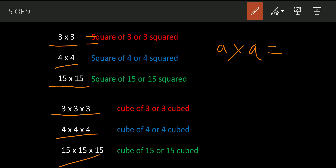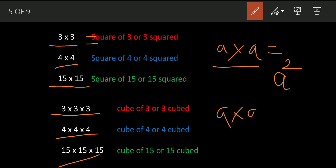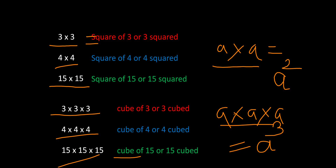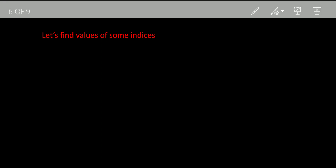Now suppose I give you a letter — a into a. How many times have we multiplied a? Two times. So how do we write it? We write a squared. Suppose I multiply a into a into a — we have multiplied a three times — so we write a raised to three, or a cubed. That is how we read algebraic indices.